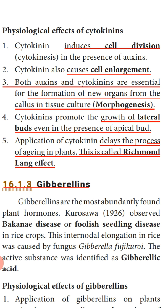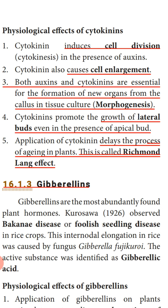Today we have studied about two plant hormones — auxins and cytokinin. Hope you have understood both plant hormones. In the next class we will study the remaining plant hormones. Thank you, children.